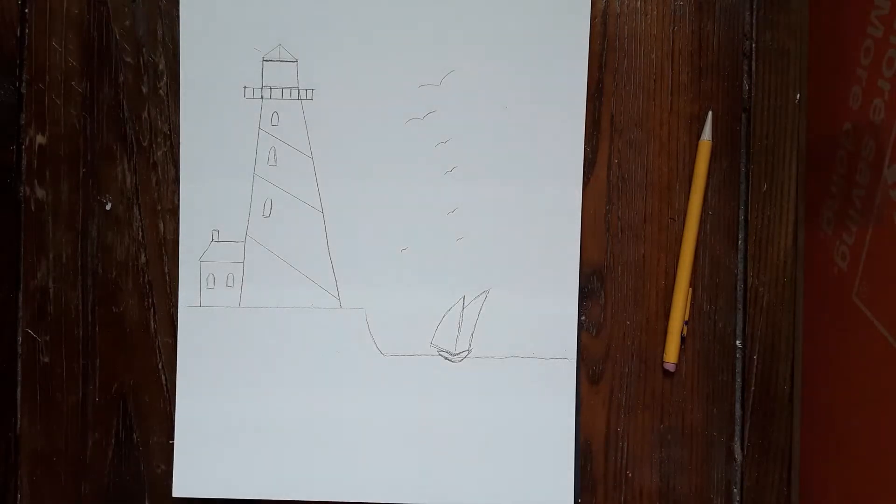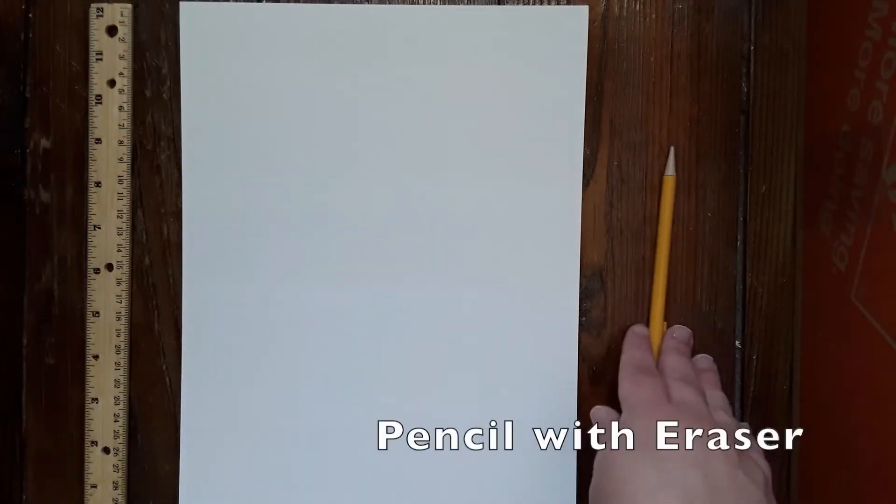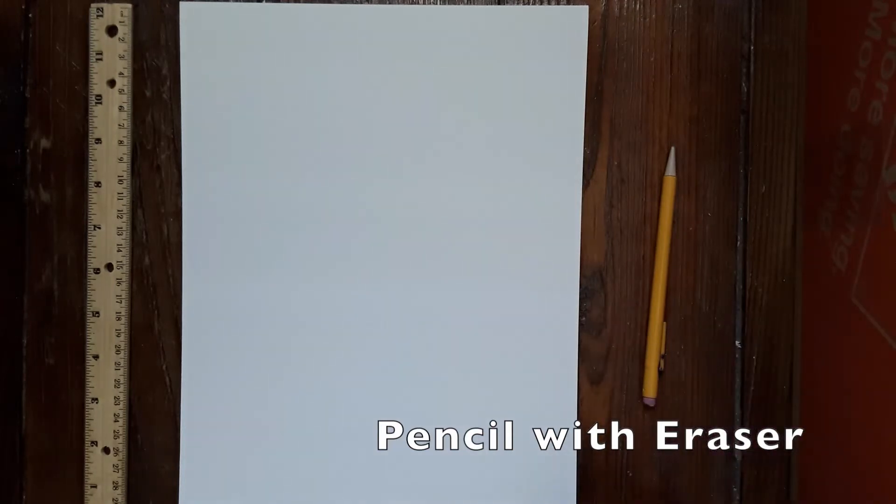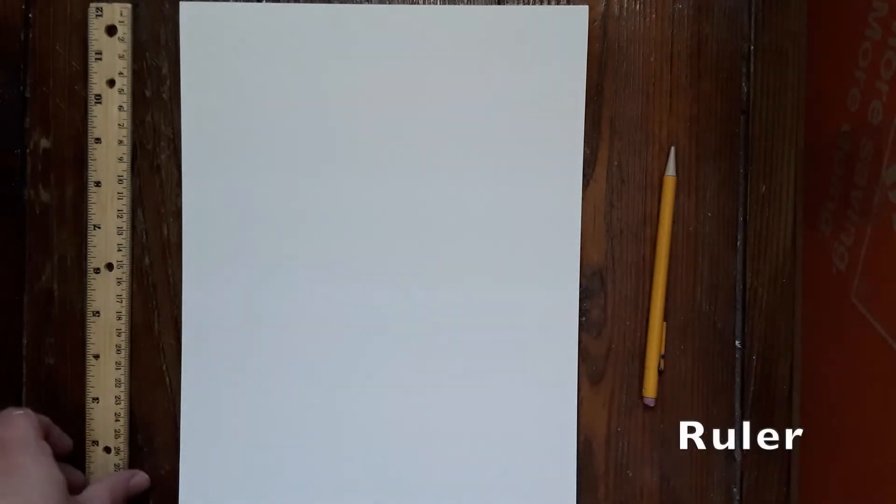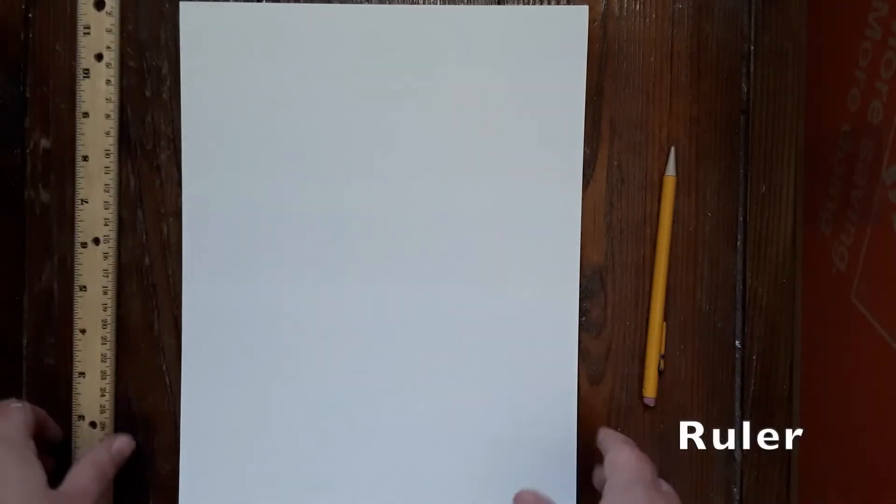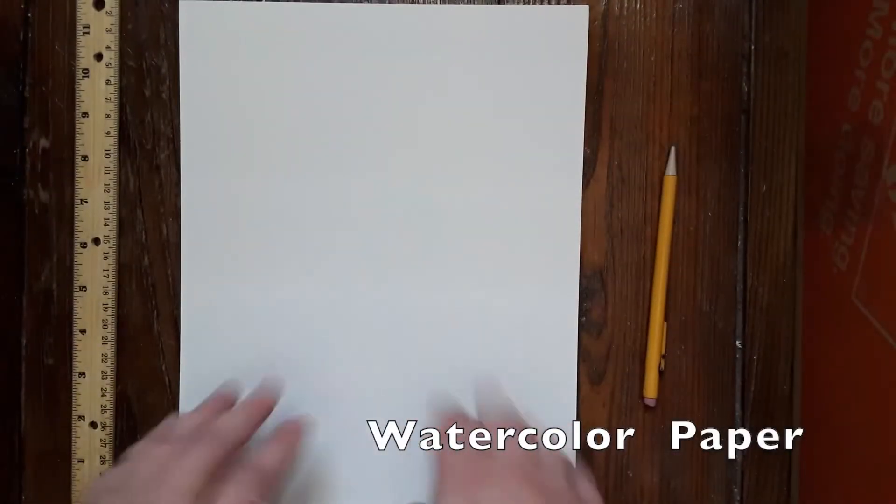It will really transform when we start to paint this. For today we are just needing three materials: I have a pencil, I grabbed a mechanical pencil because that's what I had, make sure it has an eraser, a ruler, and some watercolor paper. This is 300 pound cold-pressed watercolor paper.